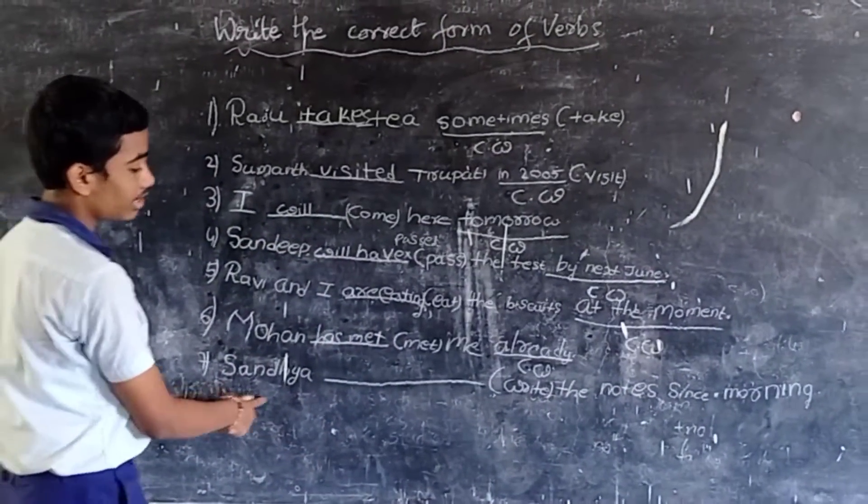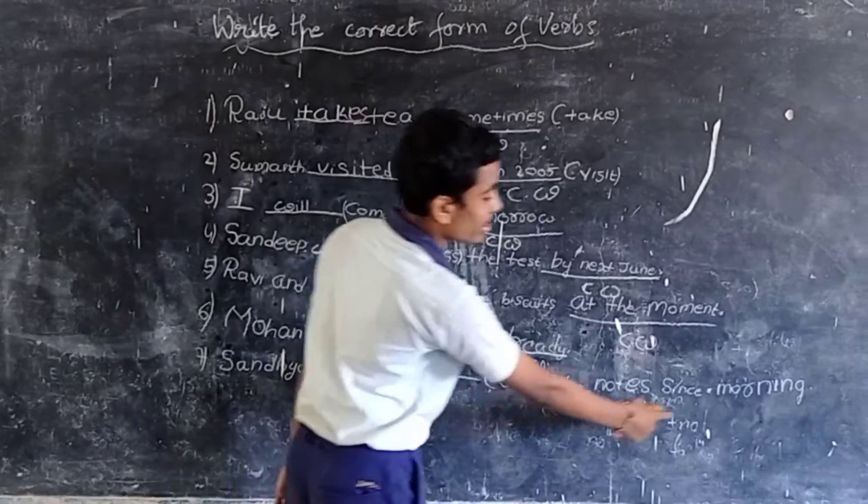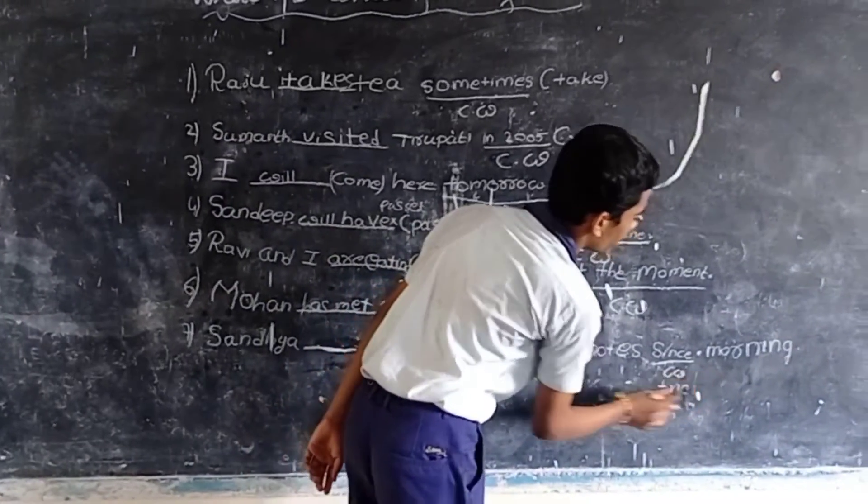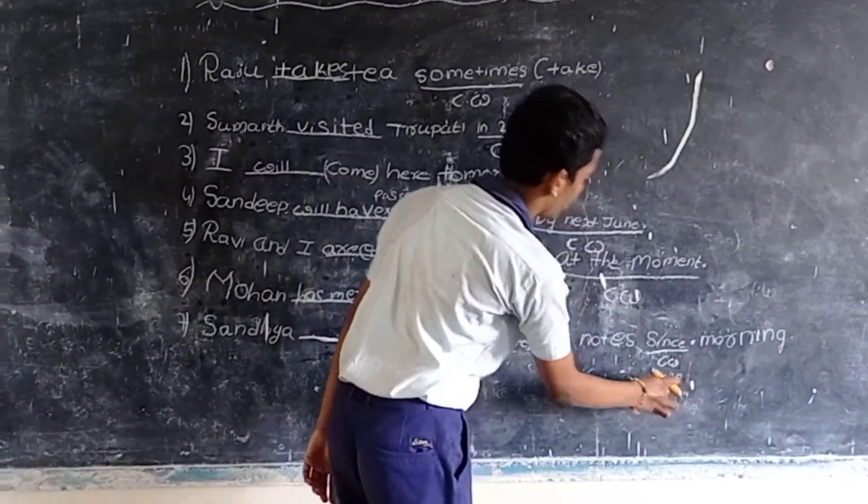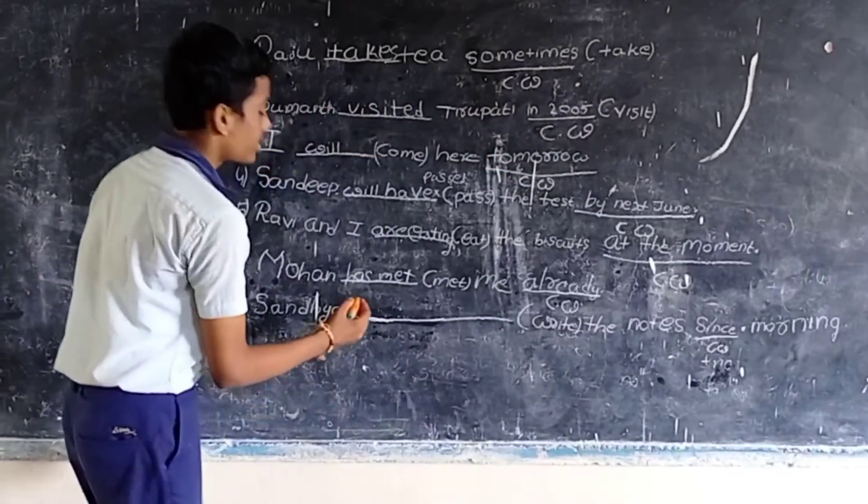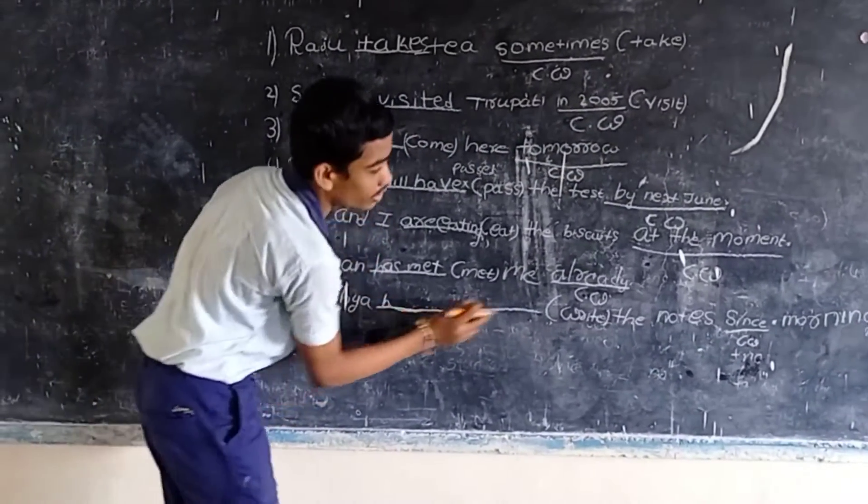The next example is: Sandeep has been writing the notes since morning. Here, the clue word is since. It belongs to present perfect continuous. So, we have to write, Sandeep has been writing the notes since morning.